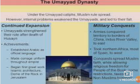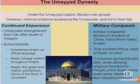Their military conquest saw armies conquer territories to the border of China in the river valley to the east, and they took northern Africa and most of Spain to the west. Their conquests spread the Muslim faith while allowing religious freedom for the people of the book, though some restrictions were in place — non-Muslims were taxed.